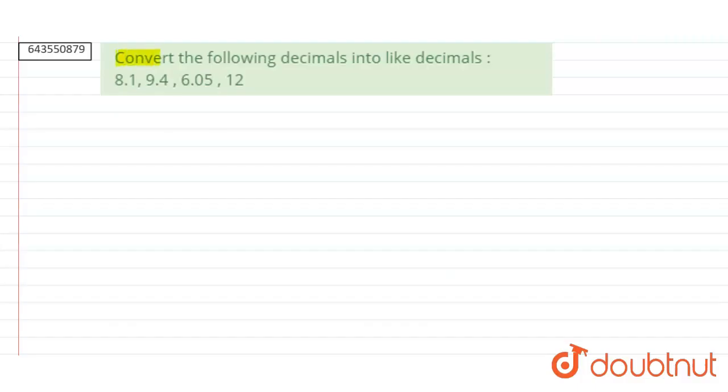The question is convert the following decimals into like decimals: 8.1, 9.4, 6.05 and 12.